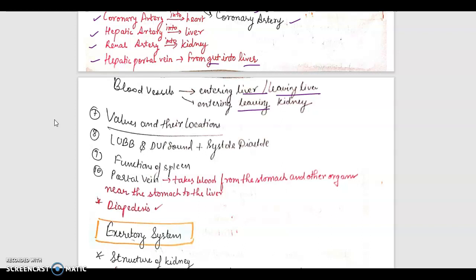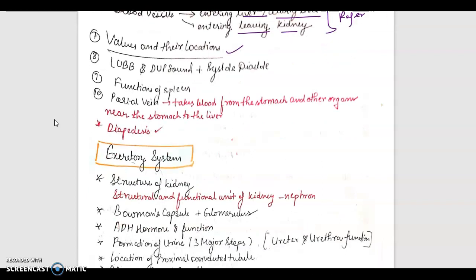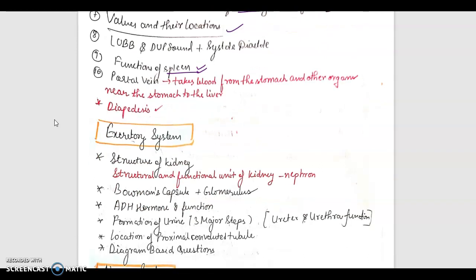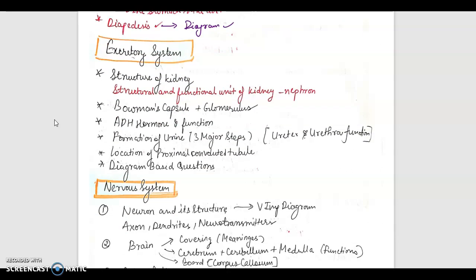Blood vessels entering liver or leaving liver, entering or leaving kidney - refer to your book. Valves and their locations, then lubb and dubb sound. The diagram is important. Functions of spleen, a very important term. Then portal vein - it takes blood from the stomach and other organs near the stomach to the liver. Then we come to diapedesis, and please refer to its diagram also. It has been asked many times previously.